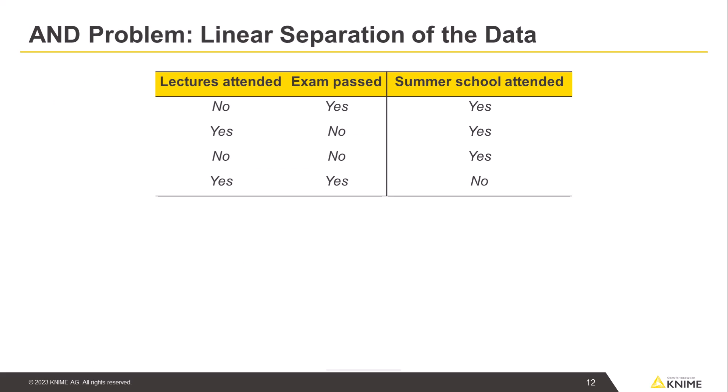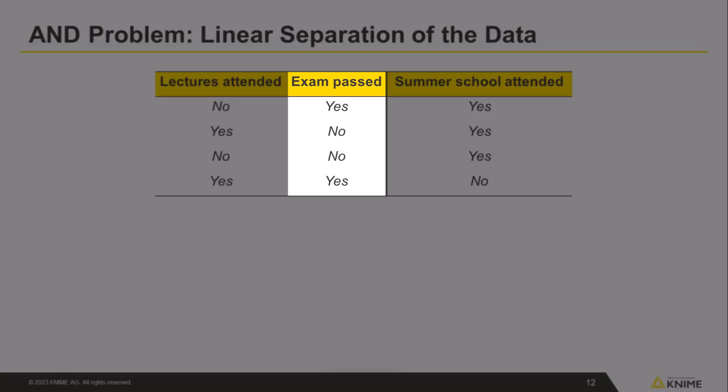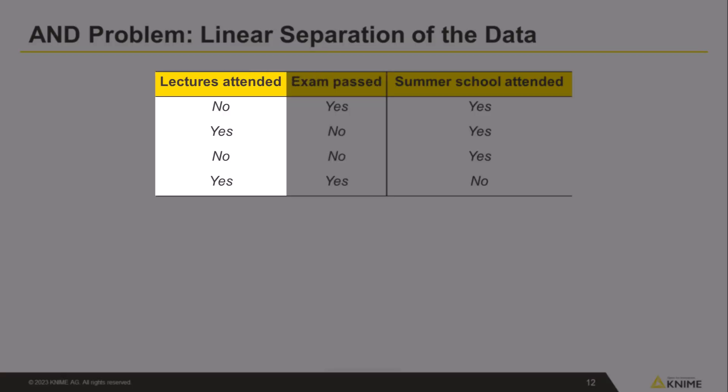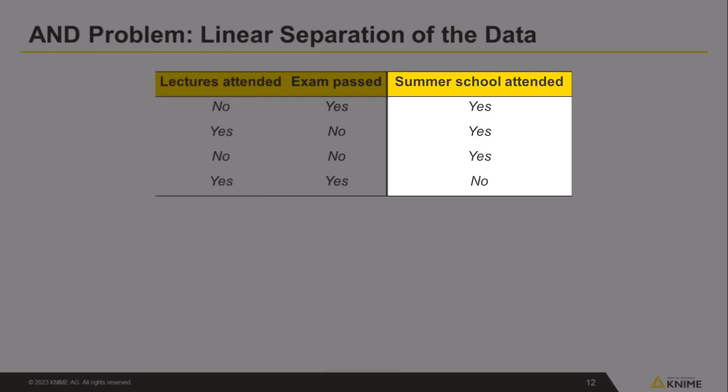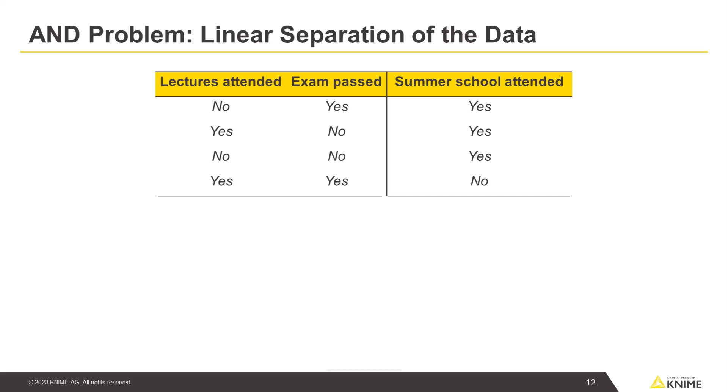We have three binomial variables about the activity and performance of some students: exam passed (yes or no), lectures attended (yes or no), and summer school attended (yes or no). We plot the data in two-dimensional feature space and show an example of linear and nonlinear separation of the data into two classes.